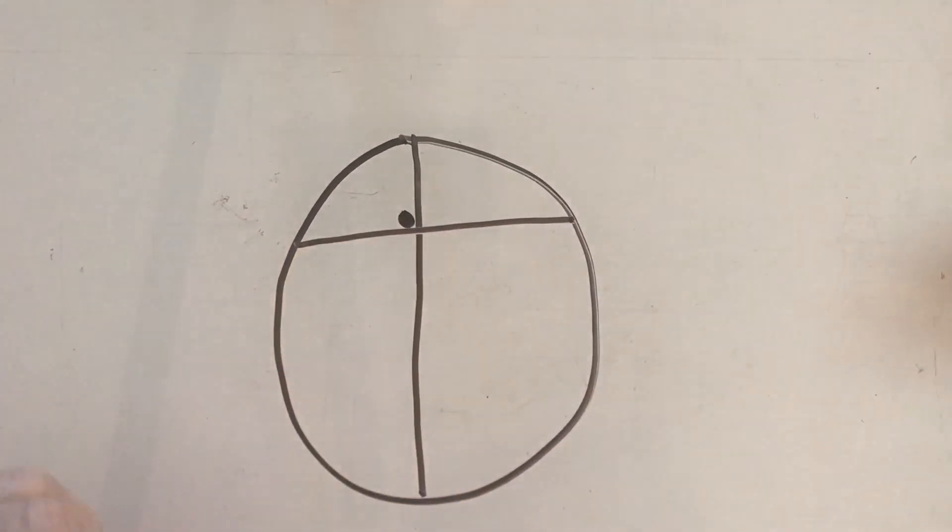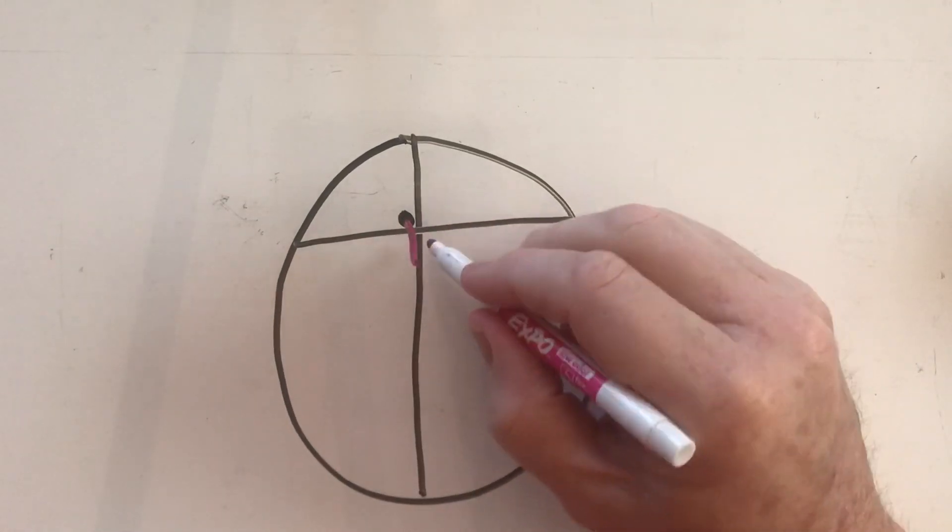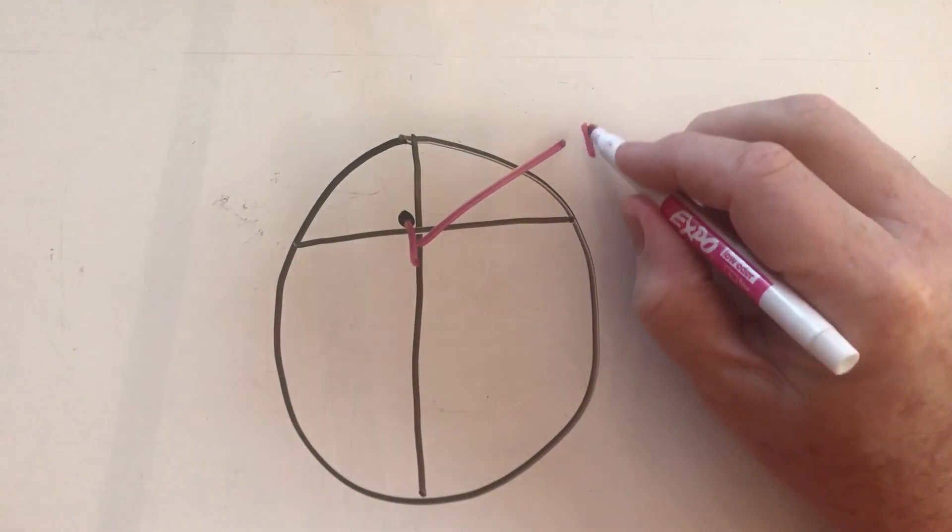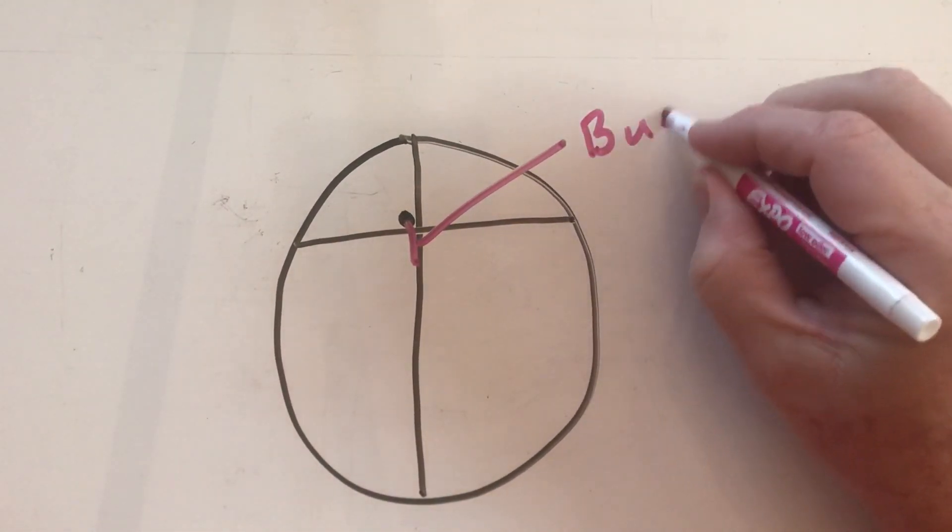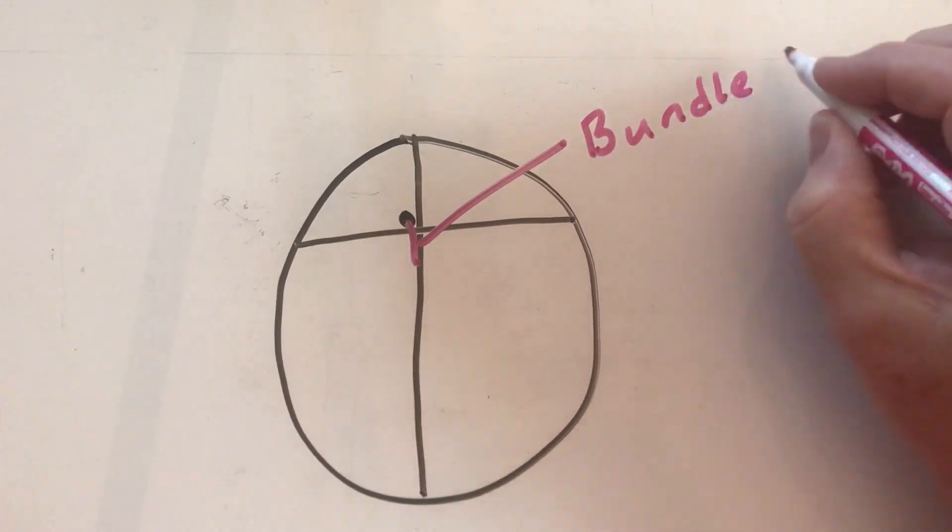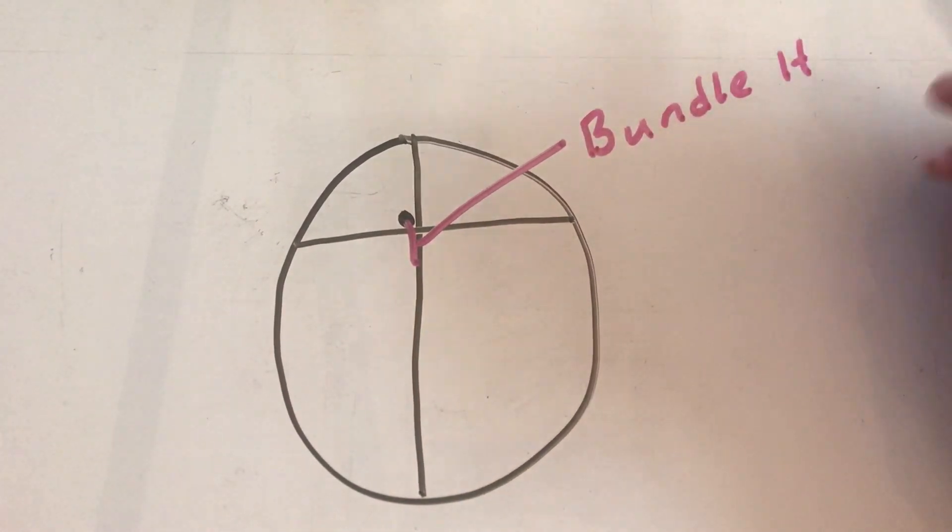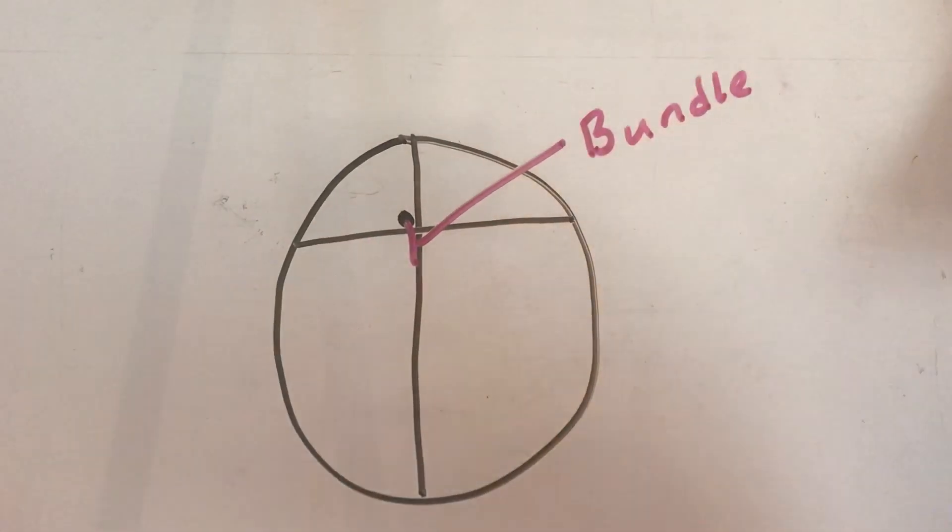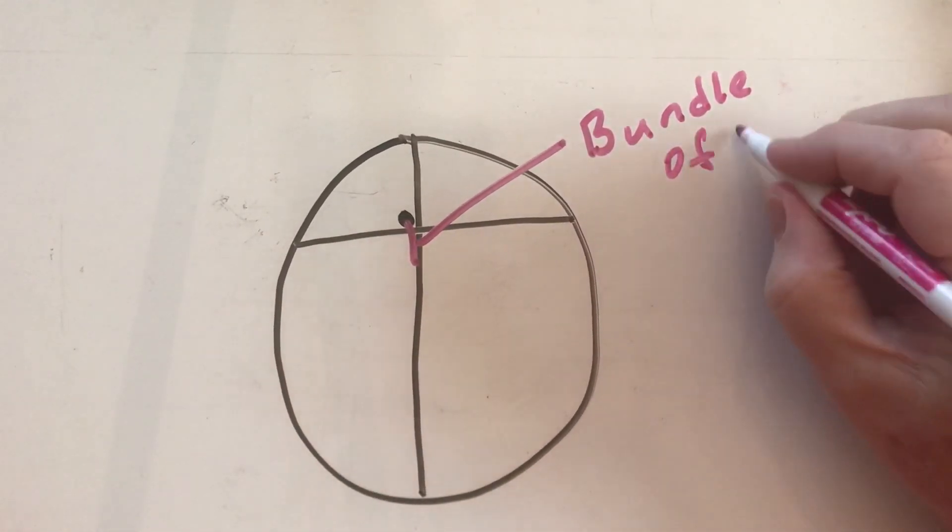And then what's going to happen is it's going to go to something called the bundle of His. So let me get a different color here. This would be called the bundle of His, also known as the His bundle.